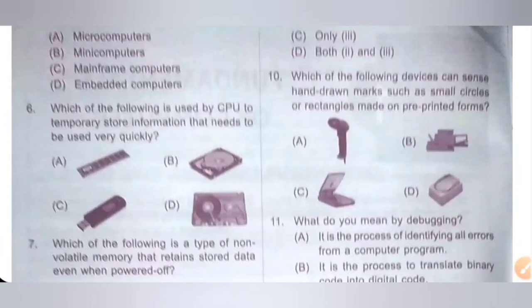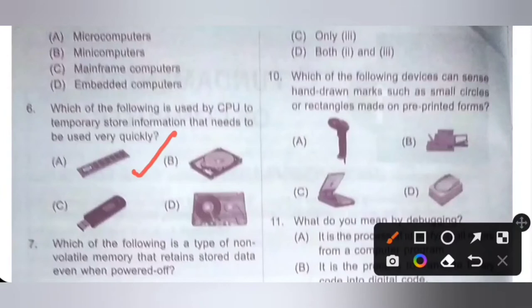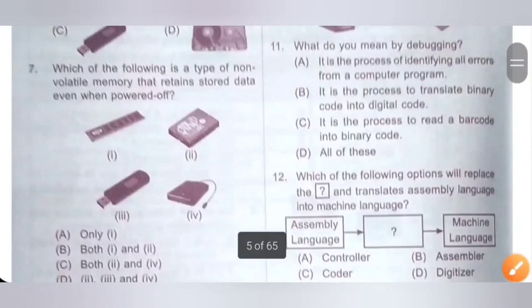Question 6: Which of the following is used by the CPU to temporarily store information that needs to be used very quickly? Options: A. Primary memory, B. Hard disk, C. Flash, D. Cassette. Option A is the correct answer — primary memory, which is the main memory of the computer also known as RAM, Random Access Memory.